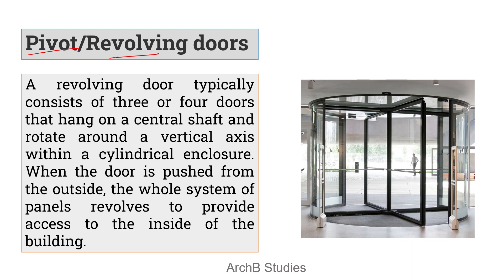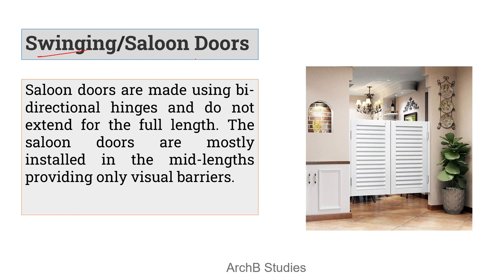Next is pivot or revolving doors. In pivot doors, three or four panels are attached with the help of a single vertical shaft or axis. When any panel is pushed, all panels rotate together. Only one or two people can pass through one quadrant at a time. These are mostly installed in places where we want to reduce the rush of people.